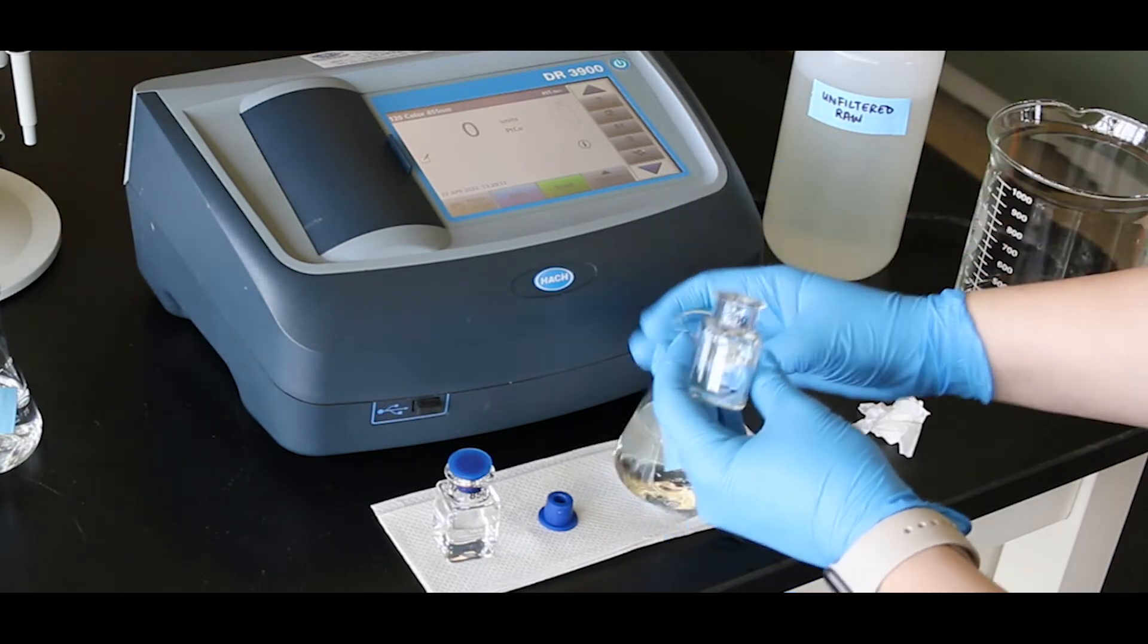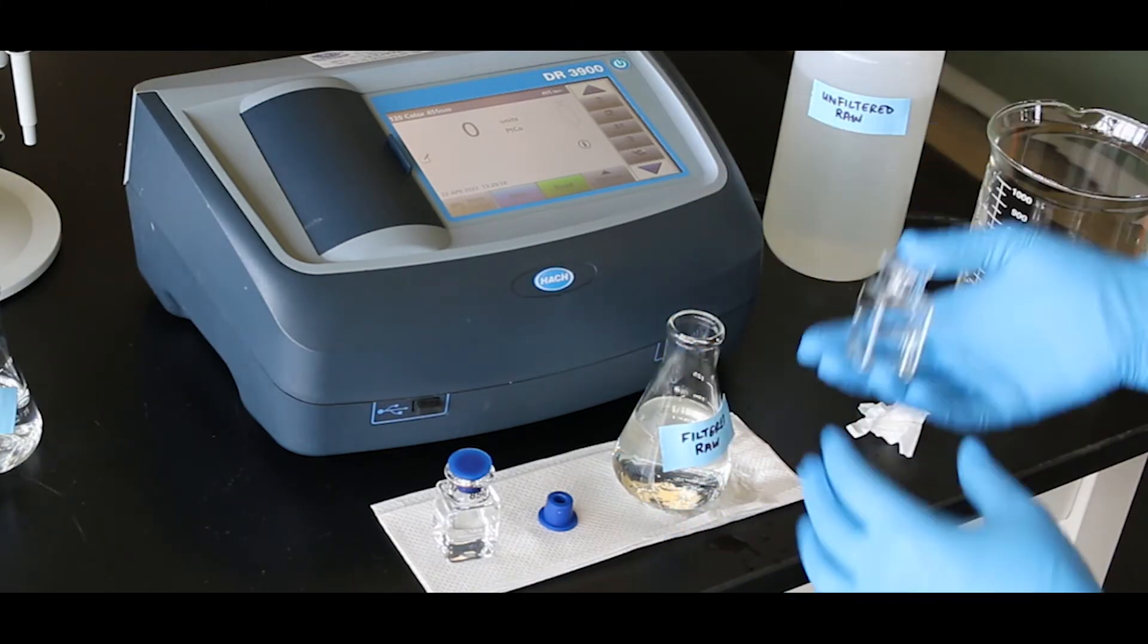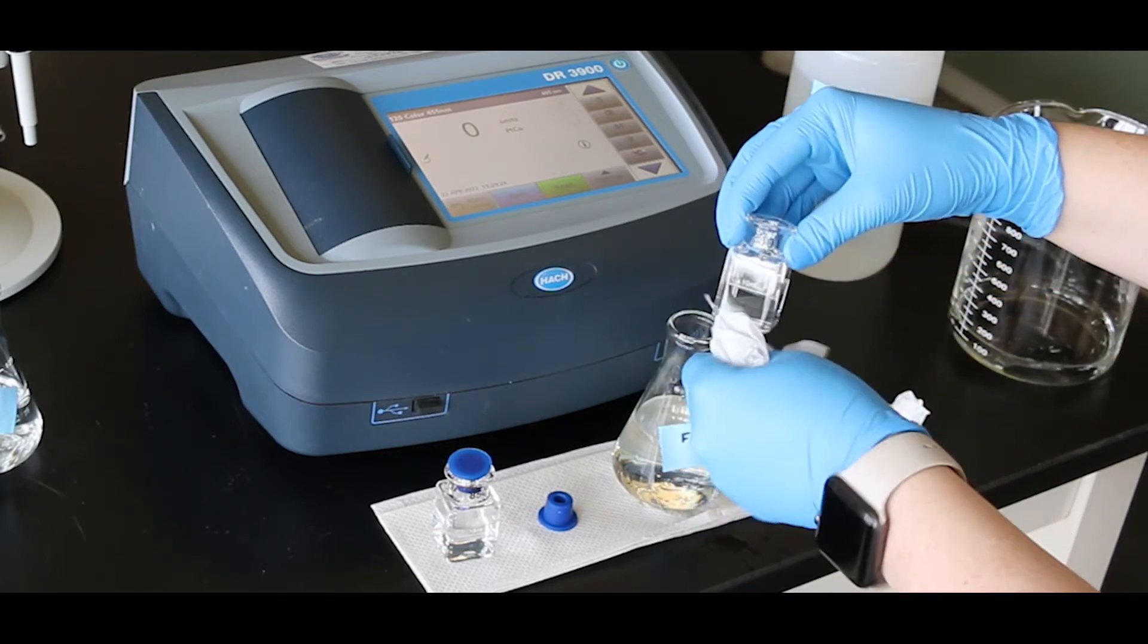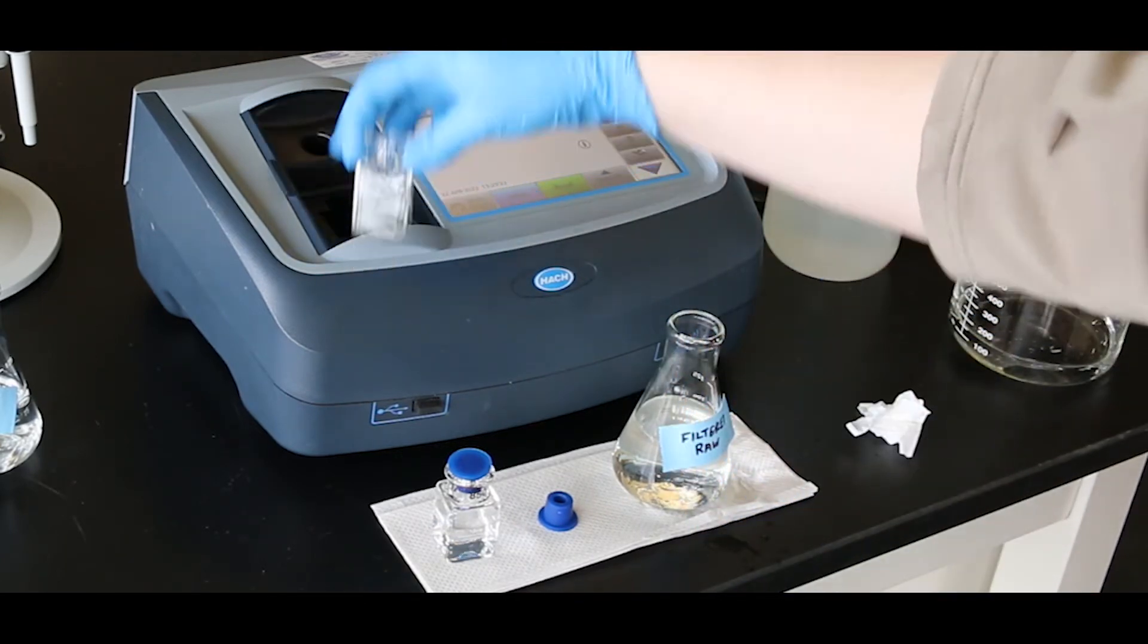For low range color, under 15 platinum cobalt units, use the same cell to zero the blank and read the prepared sample. Make sure the cell is rinsed well and conditioned with the sample.